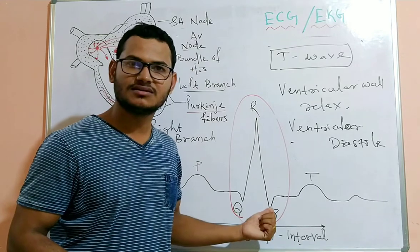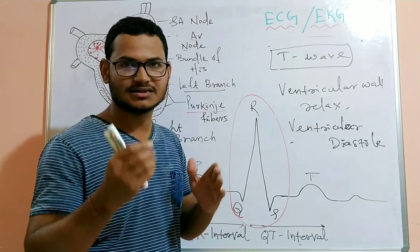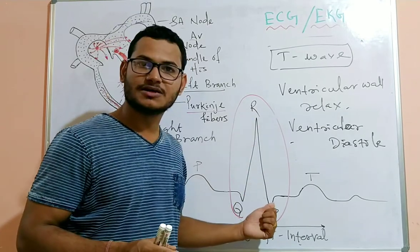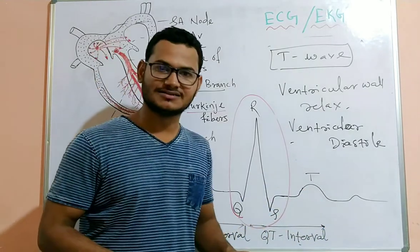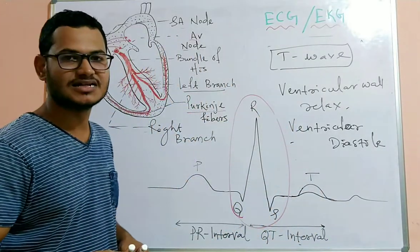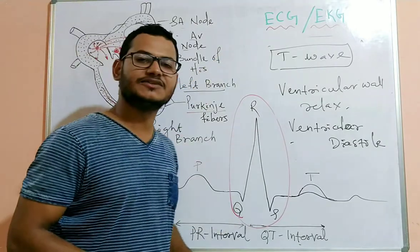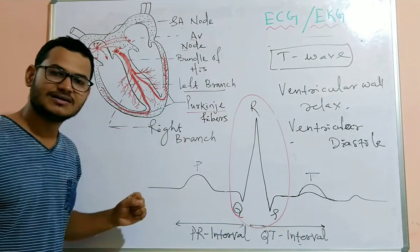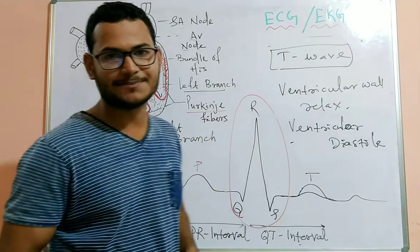A flatter T wave represents insufficient oxygen supply to the heart. By studying the electrocardiogram, we can detect different abnormalities of heart function. The ECG represents how the conduction of electrical signals takes place in our heart for the contraction and relaxation of different chambers.